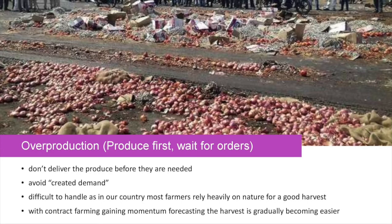The first waste we will be discussing about is overproduction. This happens when the produce is produced first and then there is a wait for orders. Do not deliver the produce before it is needed, and avoid created demand where a quantity greater than what is needed is requested. In most cases, this waste is difficult to handle as most farmers rely heavily on factors that are not in their control.